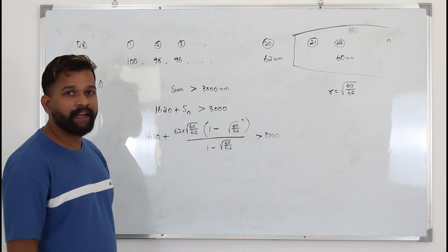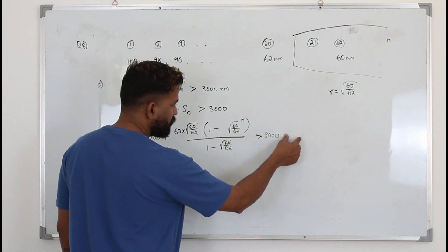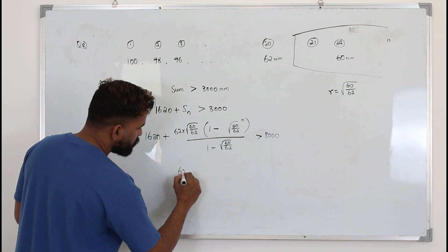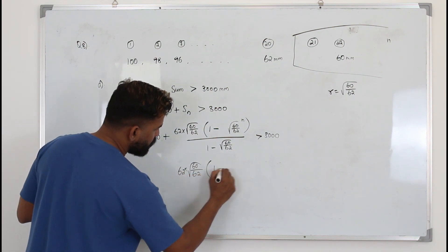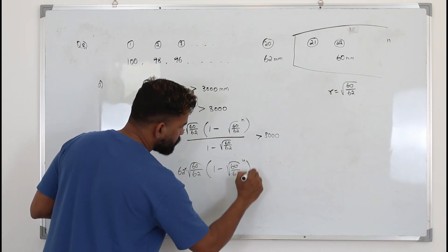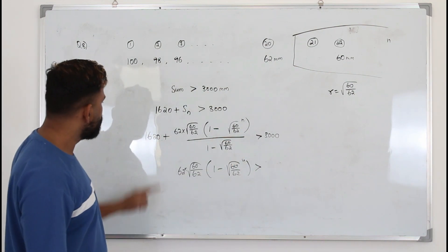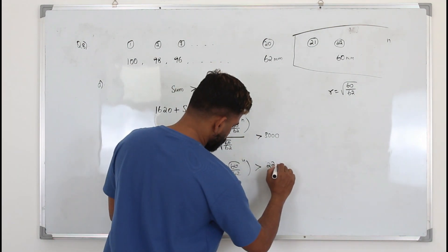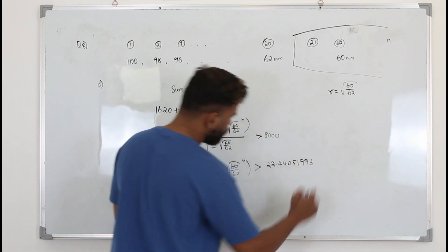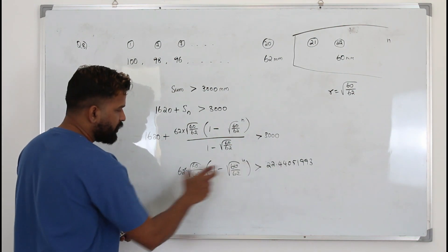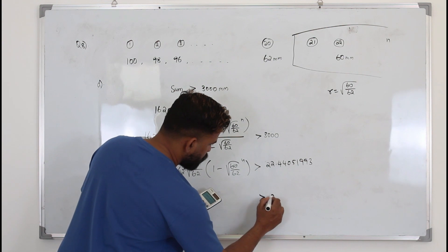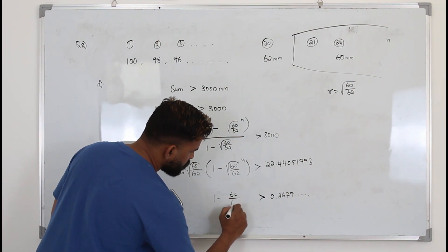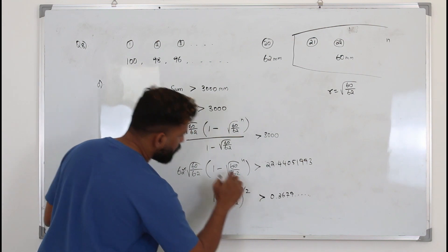Simplify this and make n as the subject. Bring 1620 to the other side: 3000 minus 1620, then multiply by (1 - r). You get 62·sqrt(60/62)·(1 - r^(n/2)) is greater than 1380(1 - sqrt(60/62)). So you get 22.44051993 on the left. Divide to get 0.3679, which equals 1 minus (60/62)^(n/2).